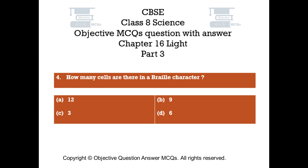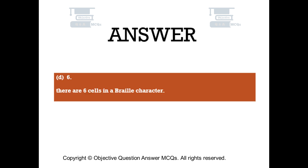Question number 4: How many cells are there in a Braille character? Option A: 12, Option B: 9, Option C: 3, Option D: 6. The right answer is Option D: 6. There are 6 cells in a Braille character.